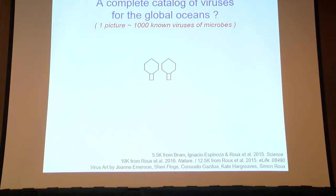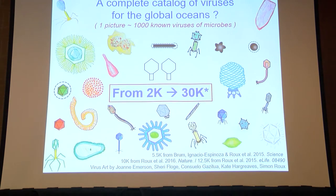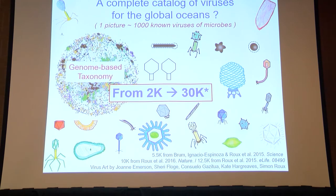I'll focus on the virus side. This image pictorializes the number of viral genomes known when we started our study — each virus icon representing about 1,000 viral genomes. When we were done, we had successfully augmented the existing databases about 15-fold. These are not all complete viral genomes — there are many complete and large viral genome fragments.